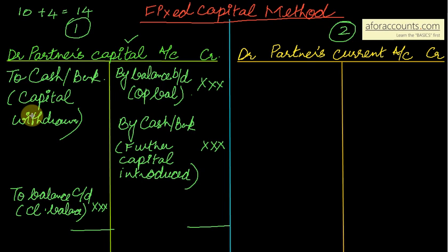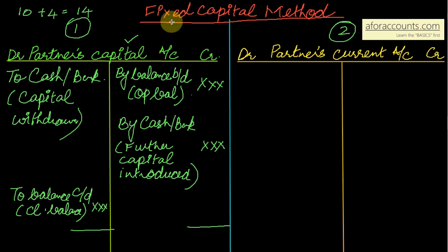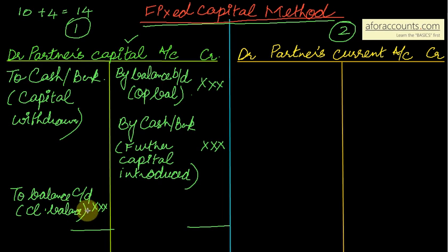One very important point to note: there is a difference between drawings and capital withdrawn. Drawings are temporary; capital withdrawn is permanent. In the partner's capital account under the fixed capital method, only permanent items are recorded — opening balance, closing balance, further capital introduced, and capital withdrawn. Only these four things appear in the partner's capital account.